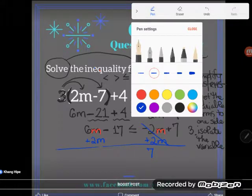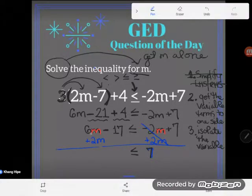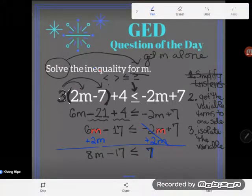I meant to write my new inequality in black. I haven't done anything to make me want to change my inequality symbol. On this side, if I had 6m already and I added another 2m, I'll have 8m. I had negative 17, and I haven't done anything to change that, so I still have negative 17. Great.